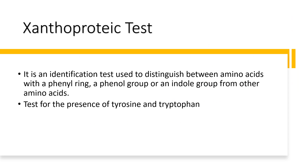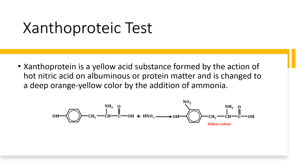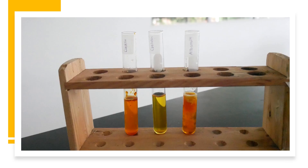The Xanthoproteic test is an identification test used to distinguish between amino acids with a phenyl ring, phenyl group, or indole group from other amino acids. It is a test for the presence of tyrosine and tryptophan. When protein is treated with hot concentrated nitric acid, a yellow colored substance is formed. The benzene ring system in tyrosine and tryptophan undergoes nitration, and the nitrated derivatives are yellow in color. When made alkaline, the shade turns to orange, indicating a positive test. Xanthoproteic acid is a yellow substance formed by the action of hot nitric acid on protein matter, changed to a deep orange-yellow color by the addition of ammonia.